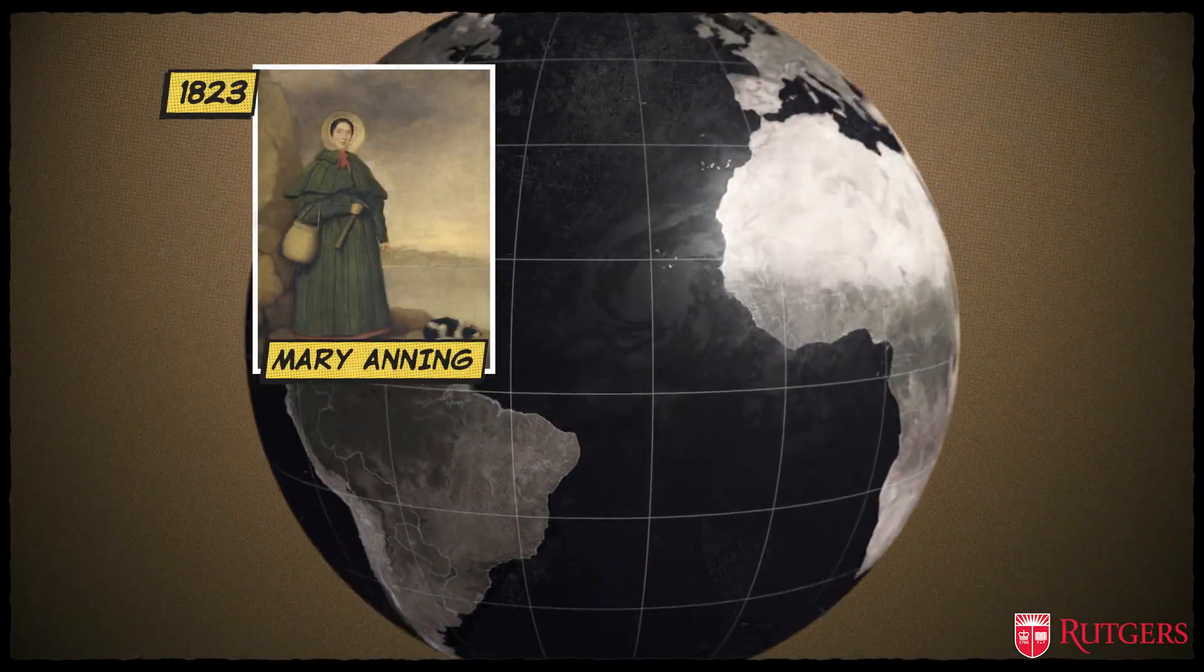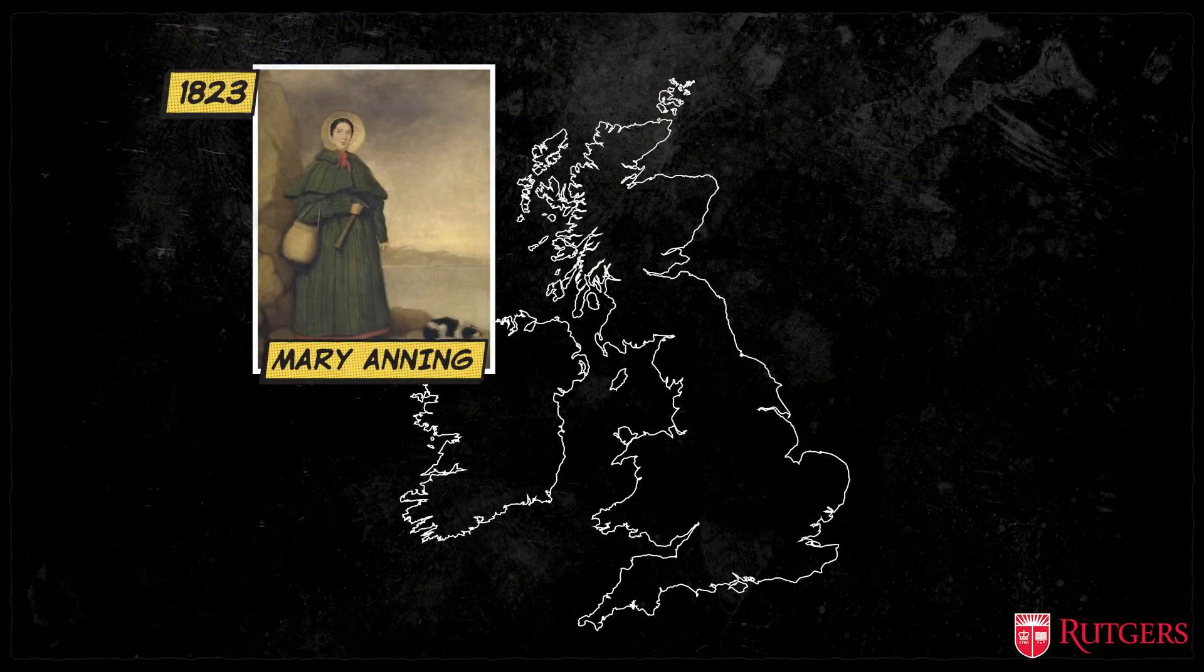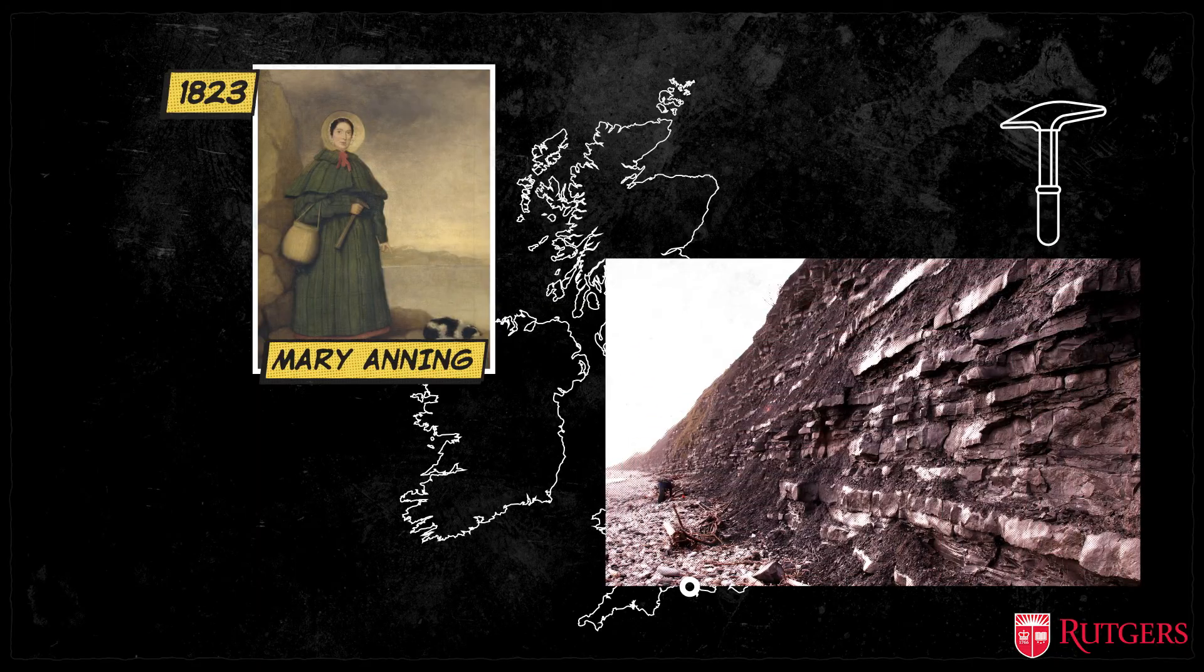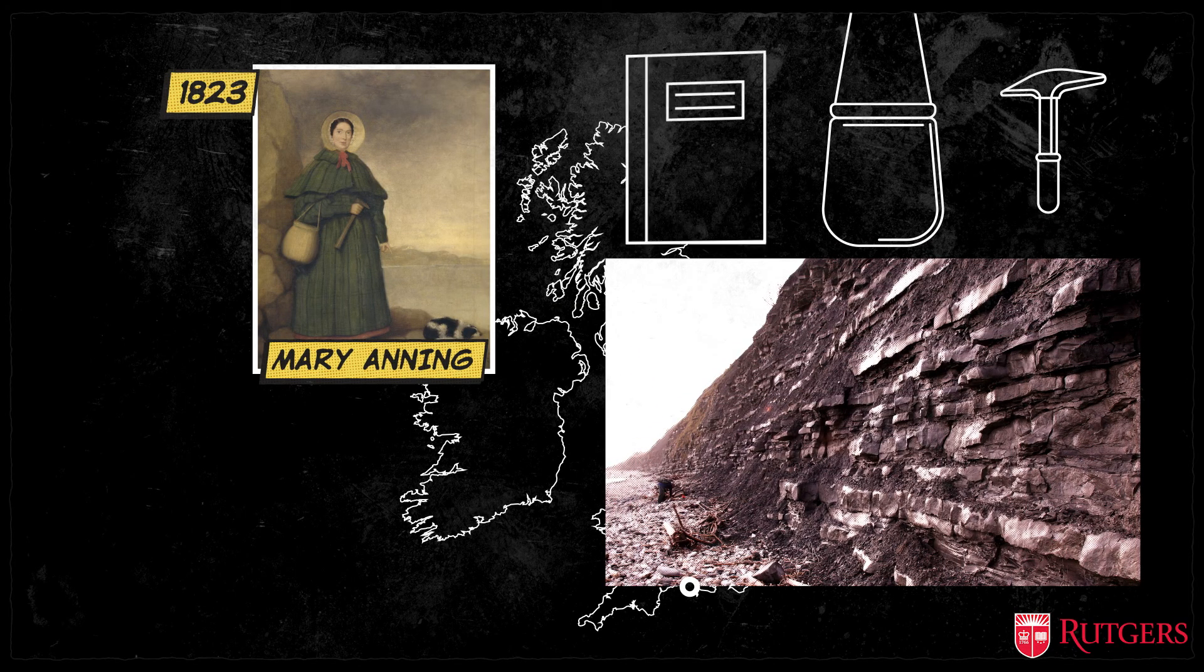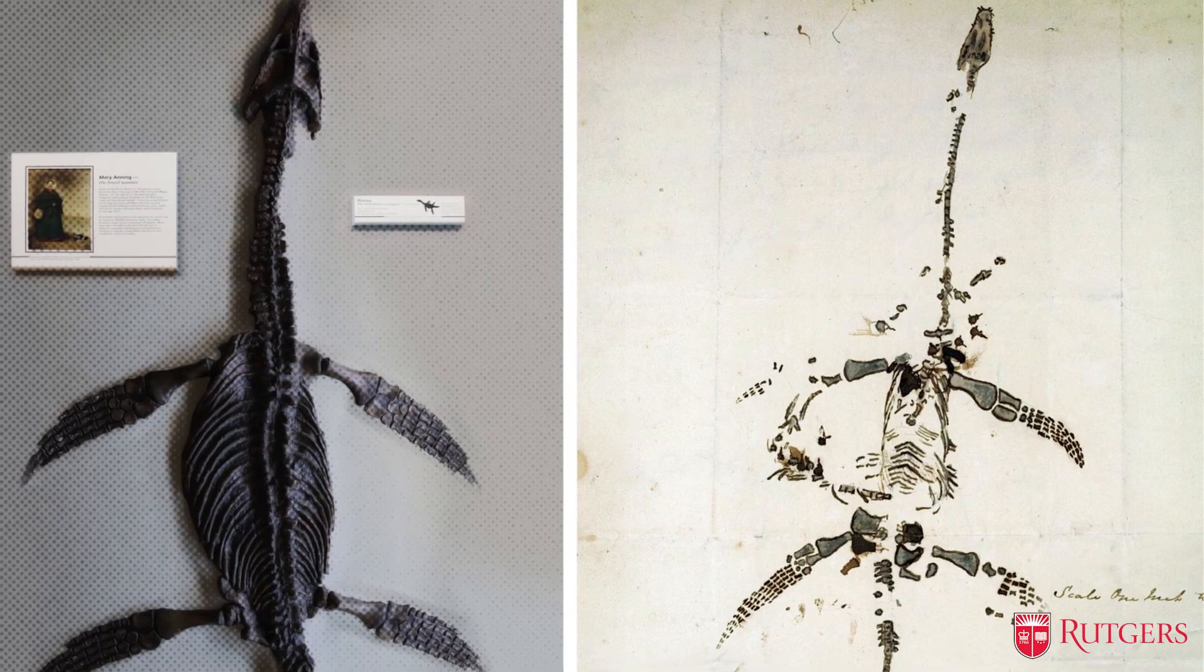When Mary Anning went looking for fossils in 1823, she climbed the cliffs of Lyme with a hammer, a bag, and a notebook. And she also drew pictures, like of the first complete plesiosaur ever discovered.